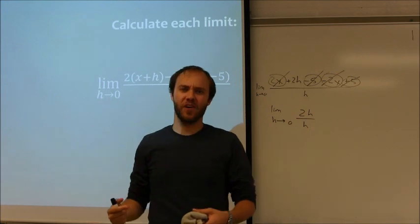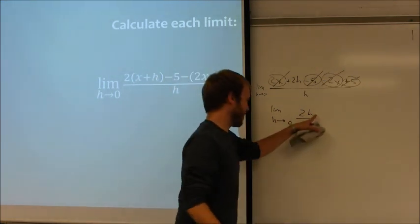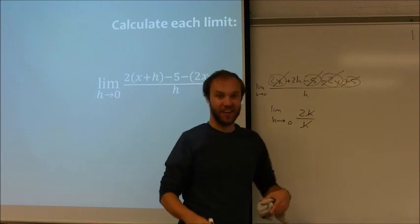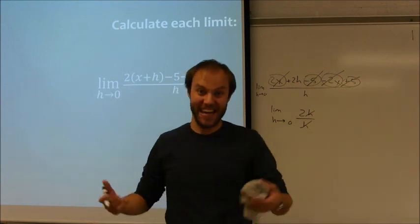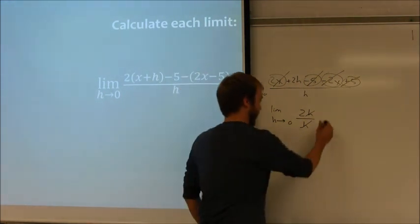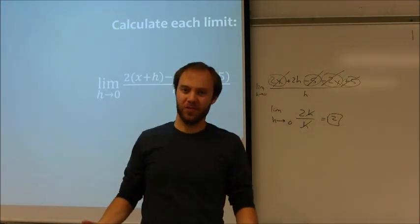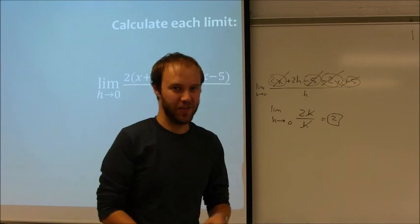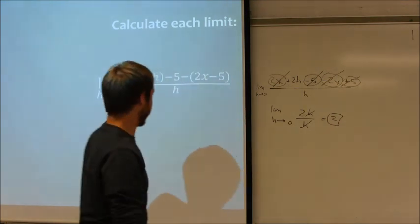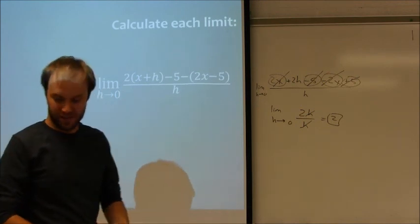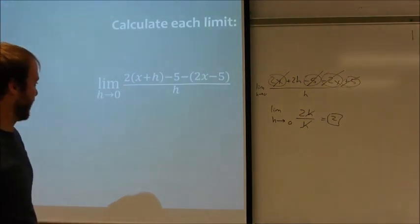And I'm just left with the limit as h approaches 0 of 2h over h, which looks a lot like what I saw earlier. I've got a greatest common factor of h that I can cancel. And of course the limit of the constant 2 as x approaches anything is just going to work out to be 2. So again, it looks horrible. Not really all that bad though in the grand scheme of things. And we're actually going to see this very important as one of our definitions of derivatives as we continue to move toward that idea.